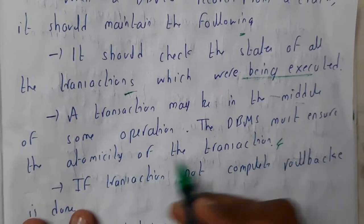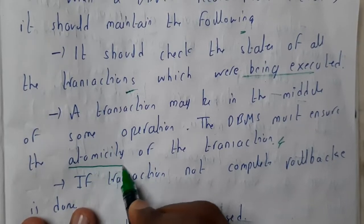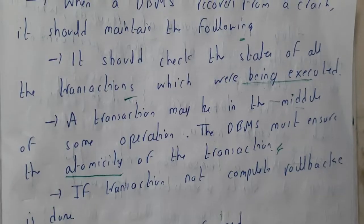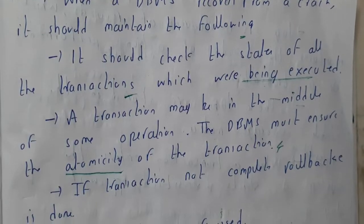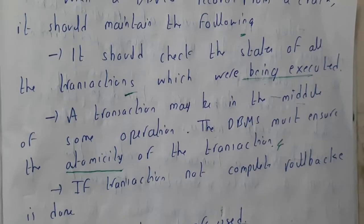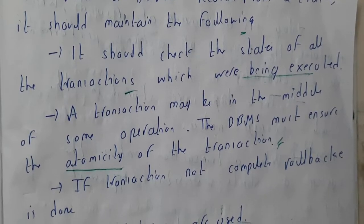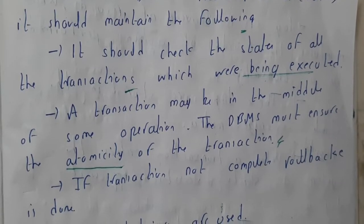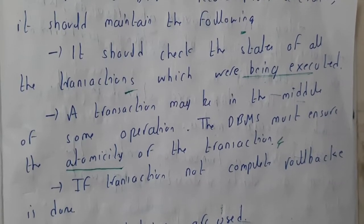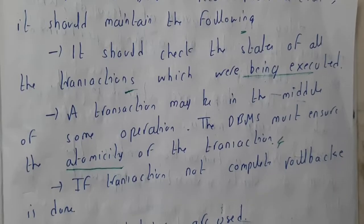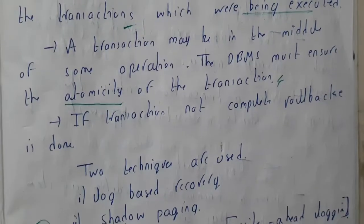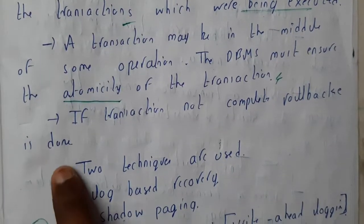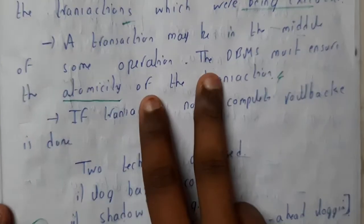Atomicity means all or none. If a transaction is in the middle, the database should either roll back to the previous state or complete the whole process from that particular moment — otherwise the whole thing will be lost. If transactions are not completely rolled back, it is handled in two techniques.